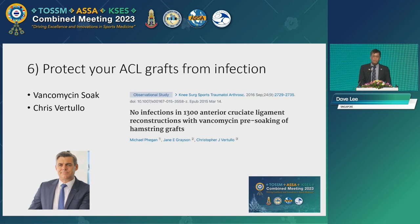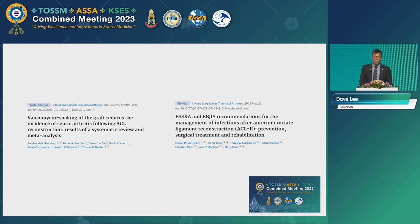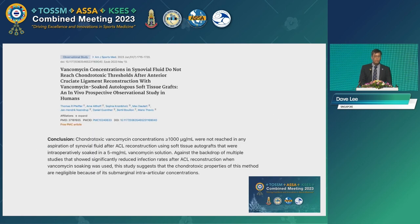Number six: protect your ACL grafts from infection. Over the last 10 years, most people are now using a vancomycin soak. I learned this about 10 years ago from Chris Vertullo from Australia. He published this and it's now caught on globally — no infections in 1,300 ACL reconstructions with vancomycin pre-soaking. ESSKA now recommends the use of vancomycin soaking of grafts to reduce graft infections. The most recent paper shows that vancomycin soaking of grafts carries no risk of chondrotoxicity — it's something very simple that can improve results.